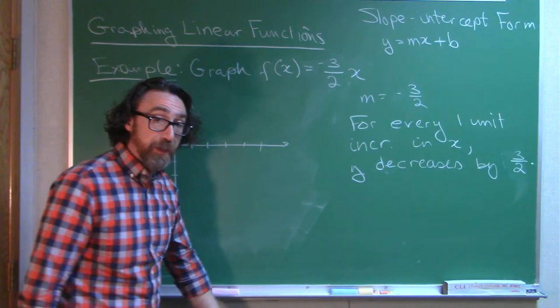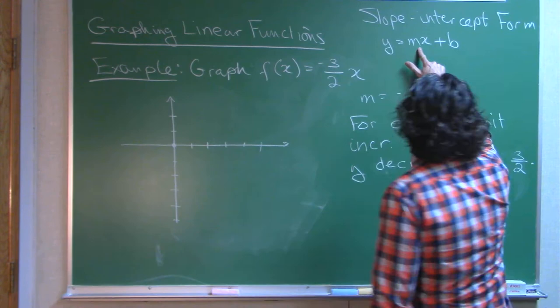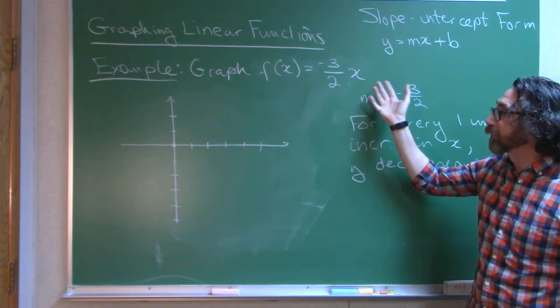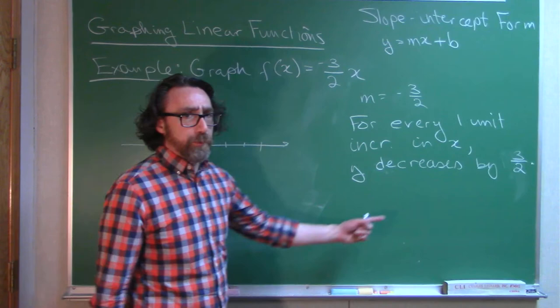Y-intercept here is 0. So the slope is negative 3/2. The coefficient of x is negative 3/2. The y-intercept is the constant. Well, there is no constant. The constant is 0. So that's our y-intercept.